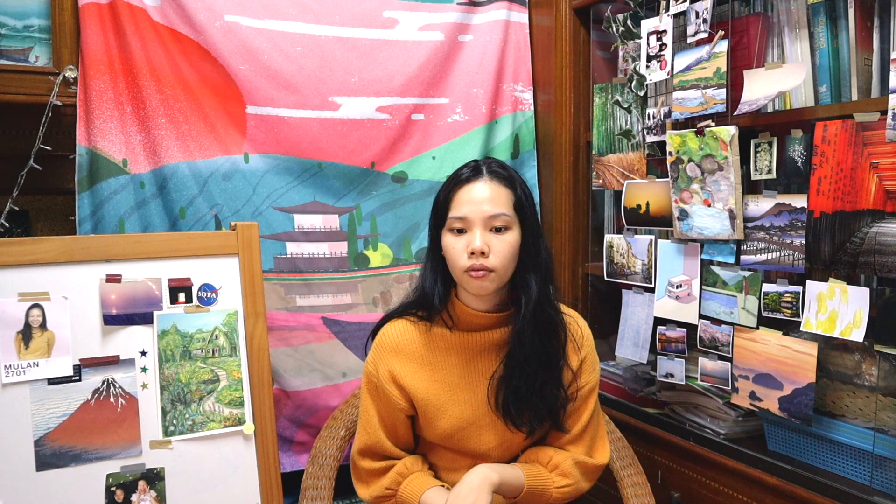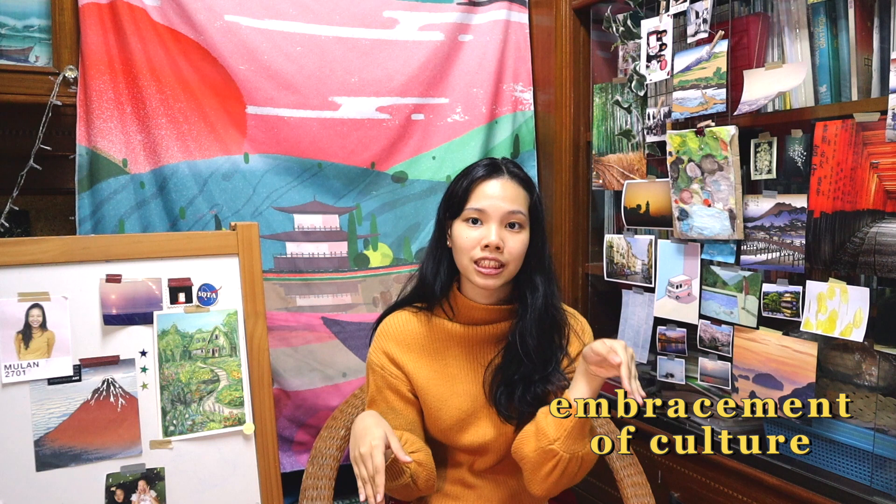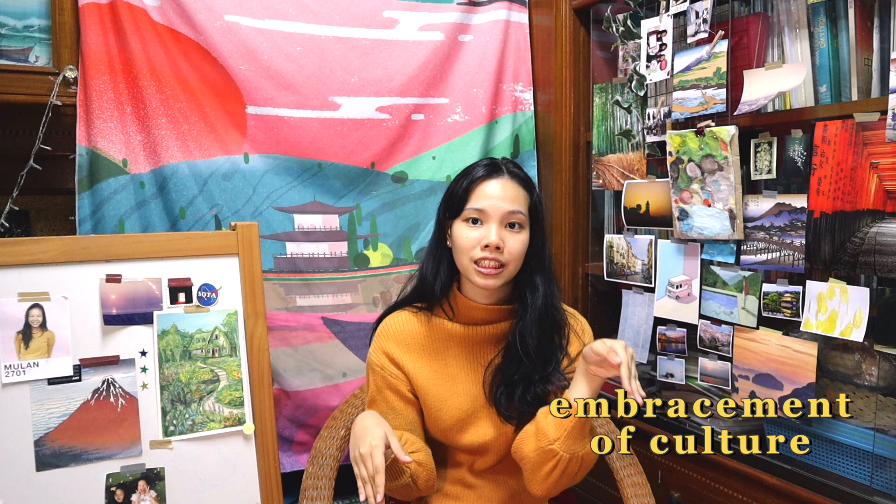One helpful approach is to think of your theme like an EE topic — very specific, but with a lot to talk about. You can start with a mind map: write a broad topic like culture, then branch off to sub-themes. Maybe the first part is the embracement of culture, and the last part is the dilution of culture. Or maybe culture branches into food, festivals, and traditions. I also try to think of themes that aren't too cliché or common, because overdone themes will invite comparisons to others who've done it before. Try to think of something unique to you, bring it out, and showcase it in your art.